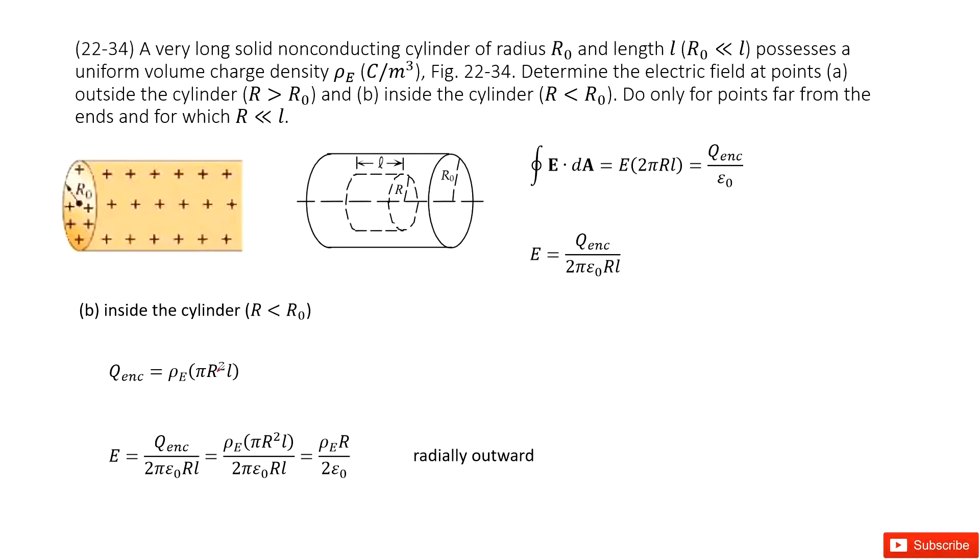So we have π R squared times L, just this region. And then we input this enclosed charge in this function. We can see π, π can be cancelled.